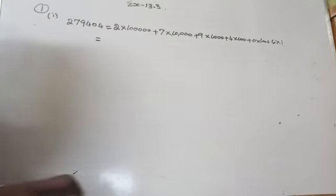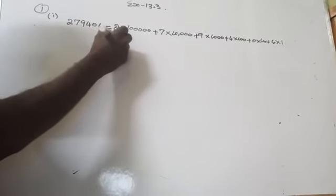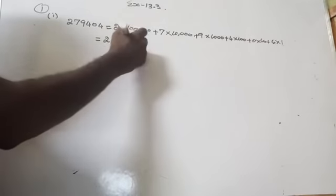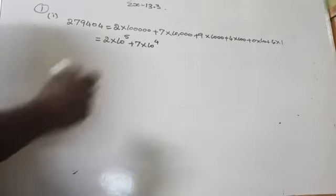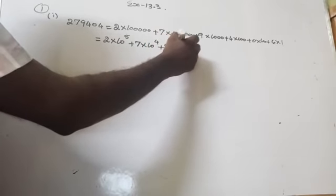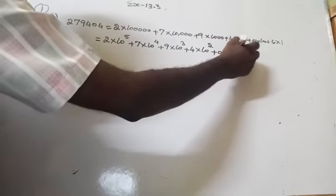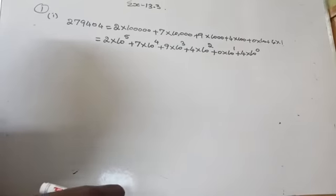Now you have to express this in exponent form. 2 into 10 to the power 5. How many zeros? Five zeros. Then plus 7 into 10 to the power 4, plus 9 into 10 to the power 3, plus 4 into 10 to the power 2, plus 0 into 10 to the power 1, plus 4 into 10 to the power 0. Because anything to the power 0 is 1, so 1 can be written as 10 to the power 0.